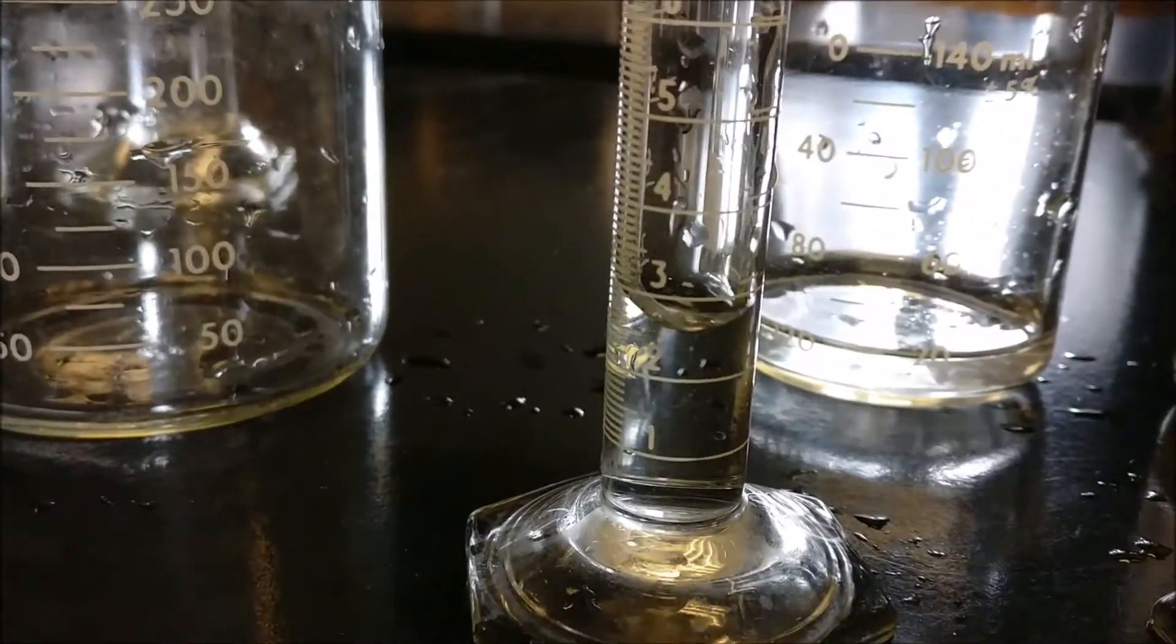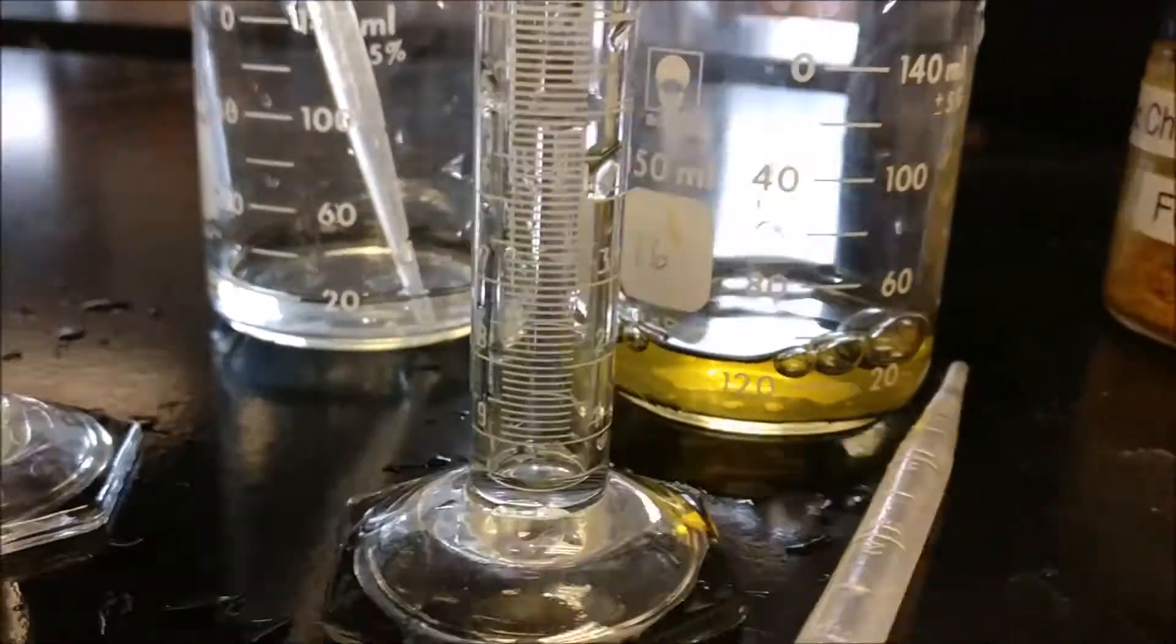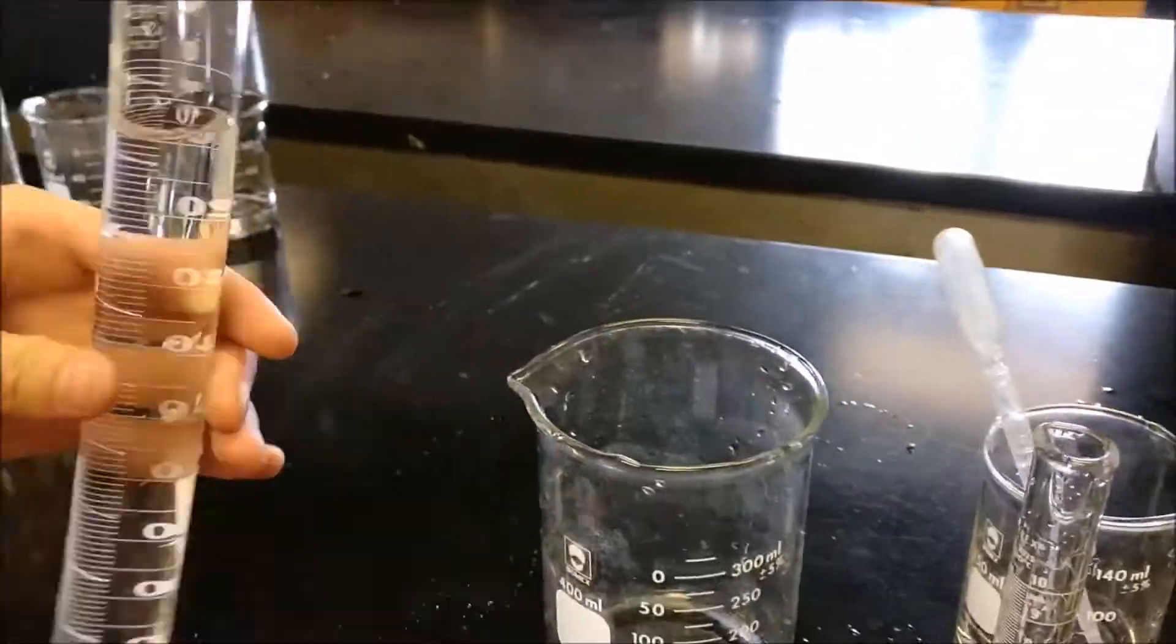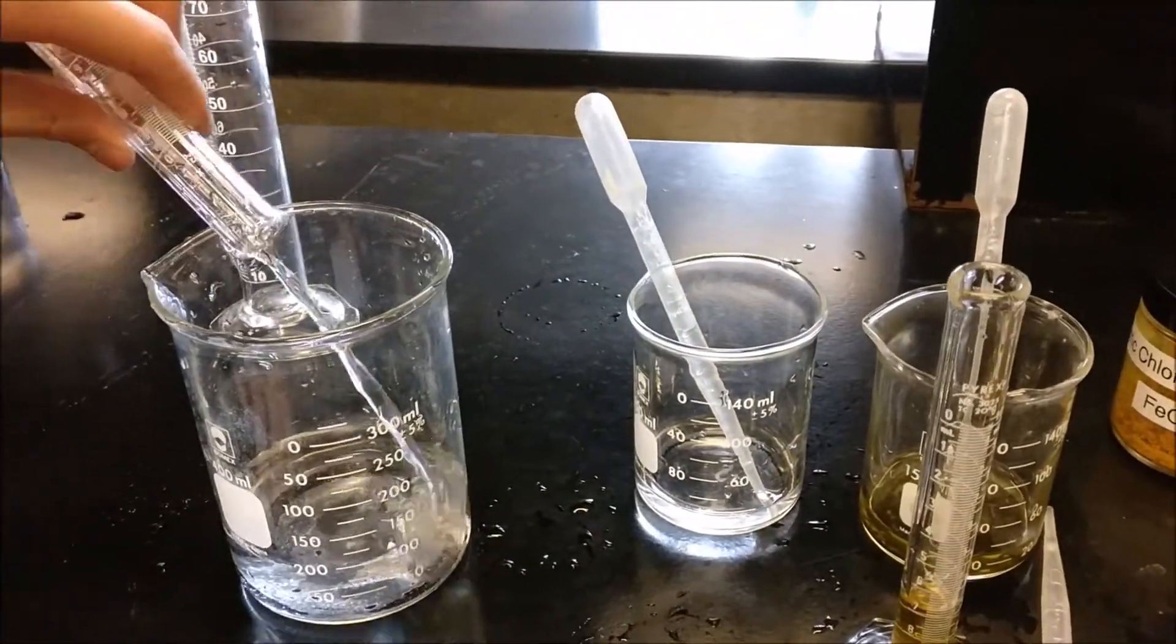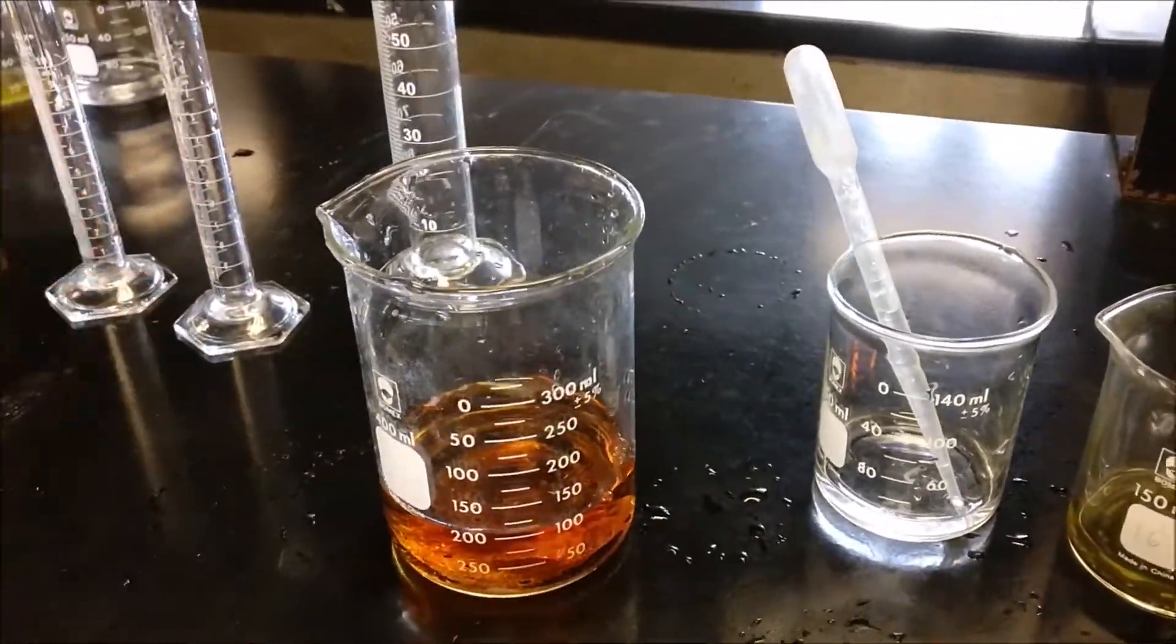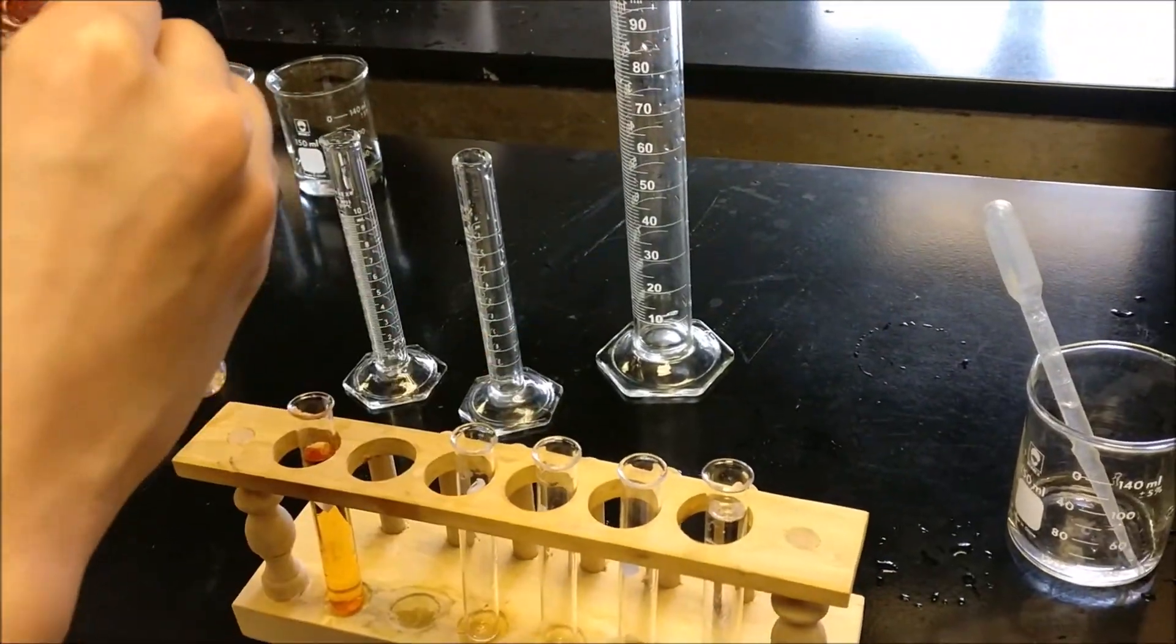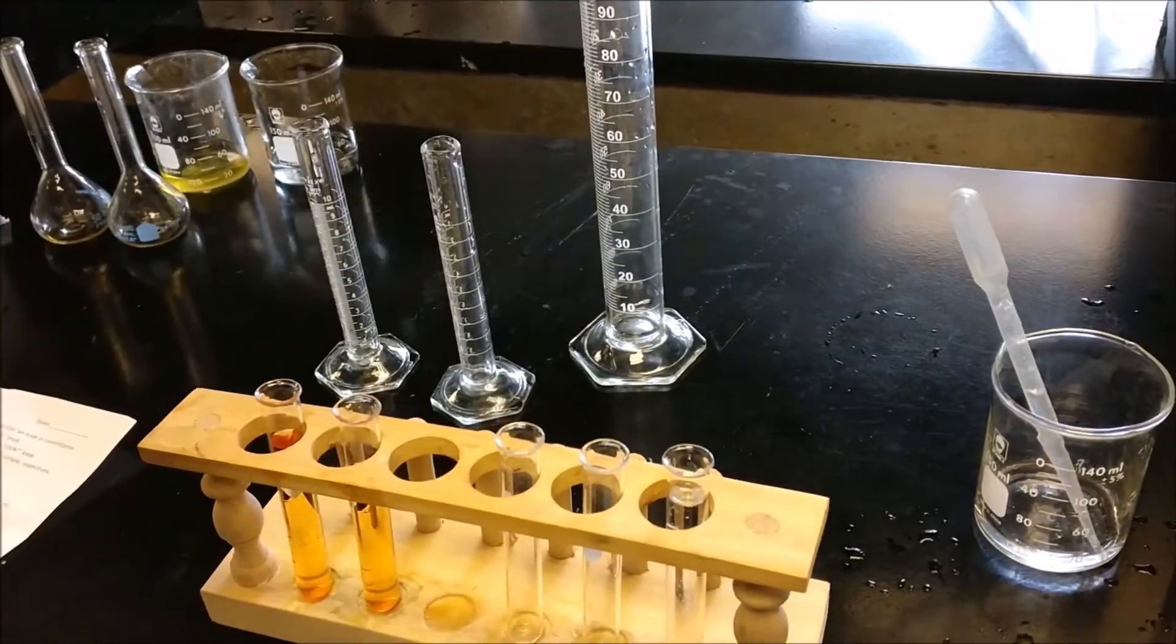First, make the solution from trial 3 again which requires 3 ml of sodium thiocyanate and 3 ml of iron-3-chloride and 94 ml of water. Then distribute the solution into five test tubes, filling each about one half to three quarters full.